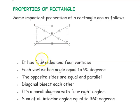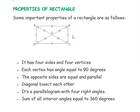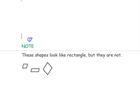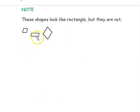Properties of rectangle: It has four sides and four vertices. Each vertex angle equals 90 degrees — all interior angles equal 90 degrees. Two opposite sides are parallel and equal in length. The diagonals bisect each other and are equal in length. It is a parallelogram with four right angles. The sum of all interior angles adds up to 360 degrees. Some shapes look like a rectangle but are not exactly a rectangle.